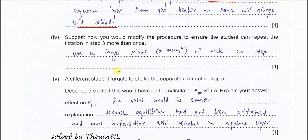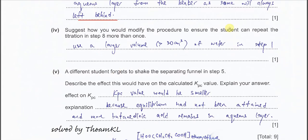For part 4, to allow the student to repeat the titration in step 8 more than once, we can increase the initial volume of water used. For example, using 50 cm³ of water instead of 30 cm³ would provide enough aqueous layer to titrate more than two times.